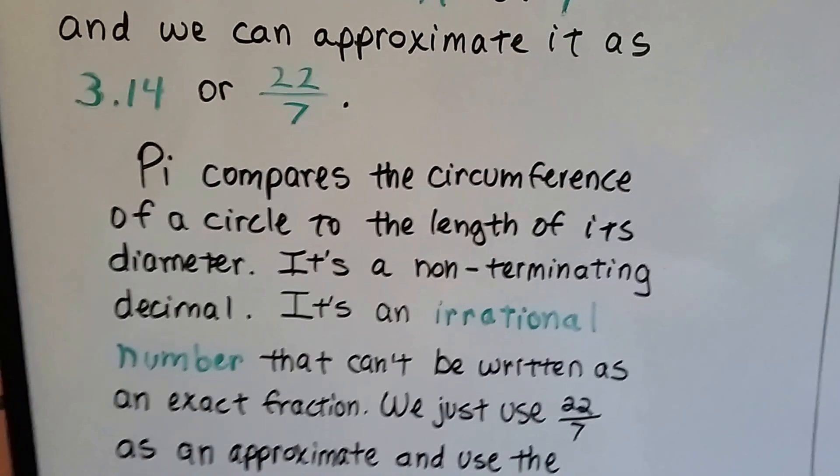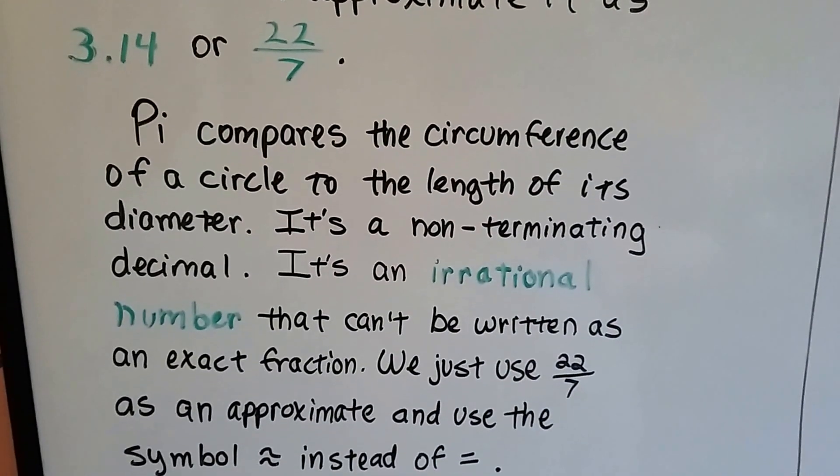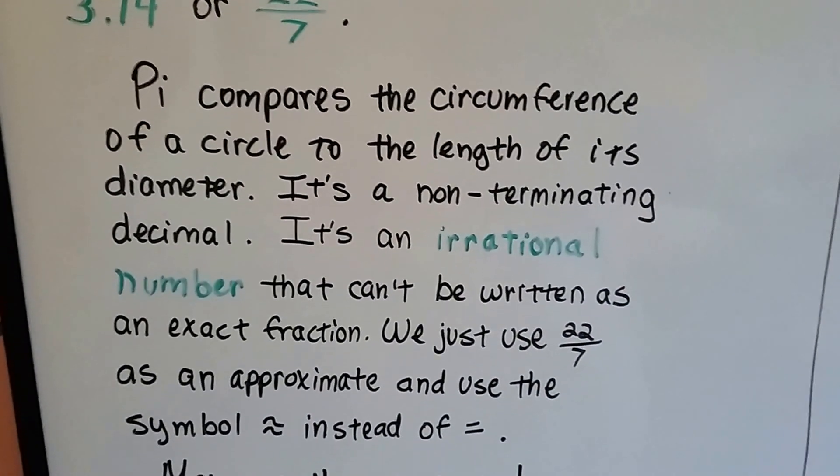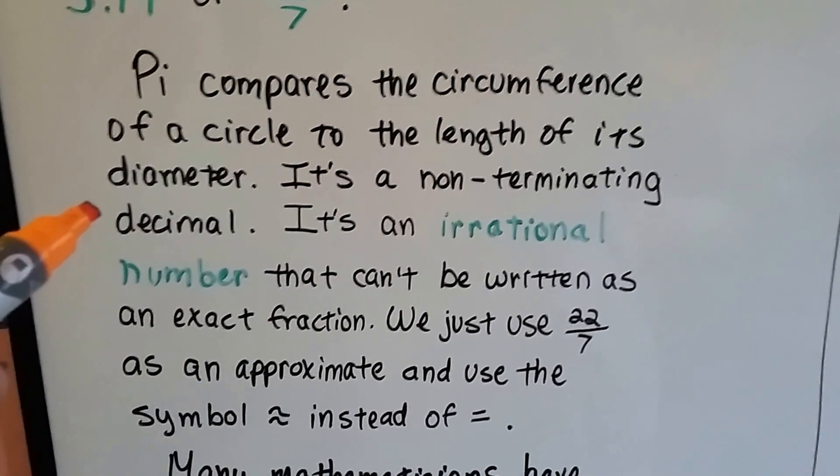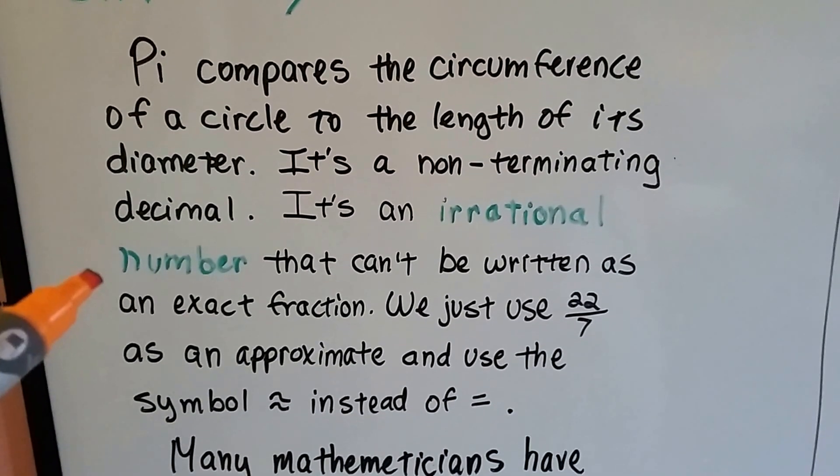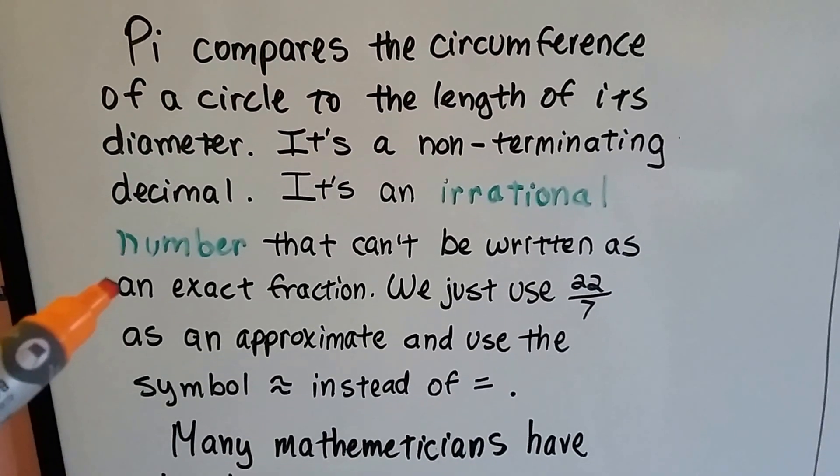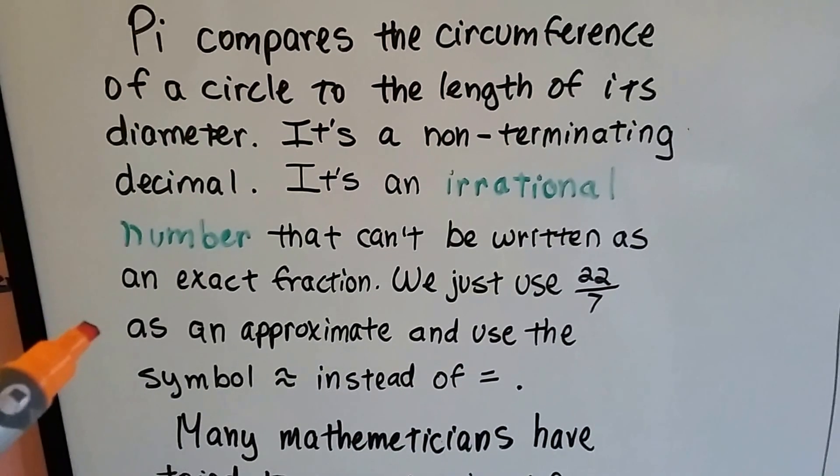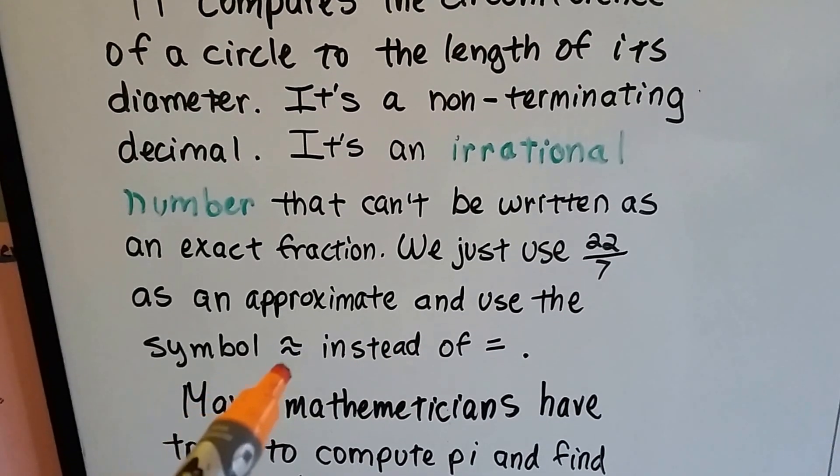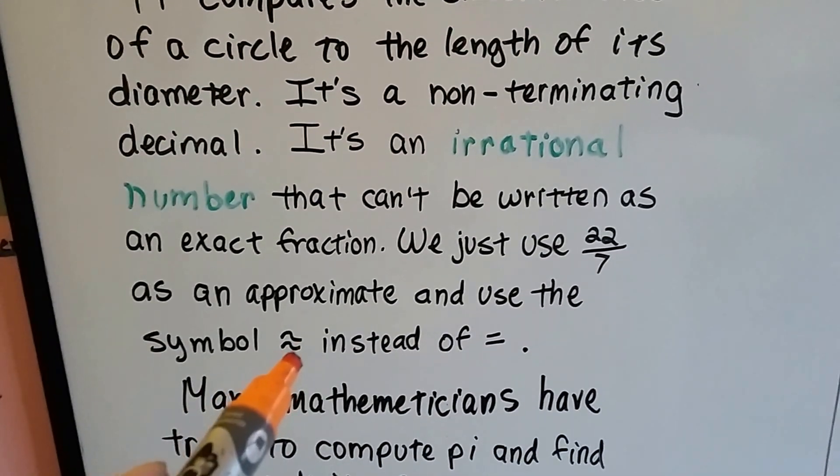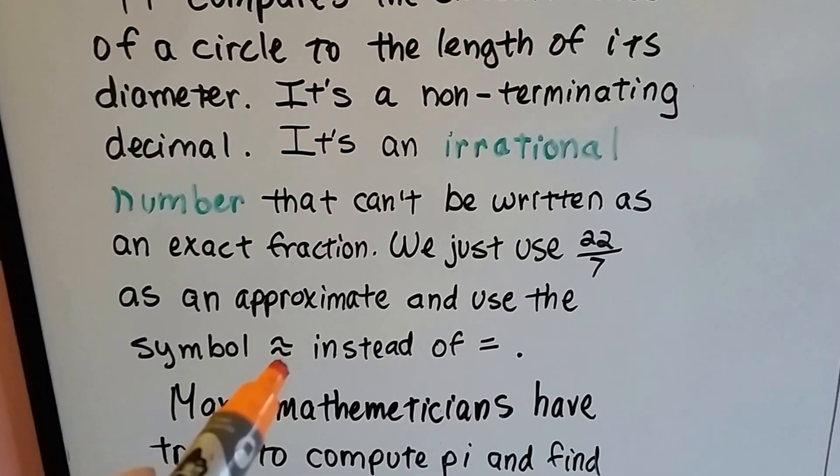Pi compares the circumference of a circle to the length of the diameter. It's a non-terminating decimal. There's no end to it. And it's an irrational number that can't be written as an exact fraction. So we just use 22 over 7 as an approximate, and we use this symbol, the two wavy lines, instead of an equal sign. This means approximately.